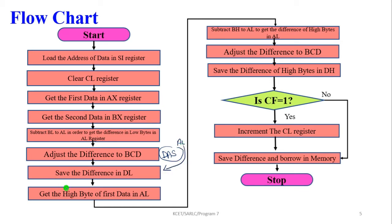Next, get the high byte of the first data into AL — AH is moved into AL. Subtract BH from AL to get the difference of the high byte stored in AL. The result is not a BCD number, so use the DAS command to adjust the difference to BCD. Save the high byte difference in DH. Finally, check the carry flag: if set, increment CL and move CL and the difference to memory; if zero, move CL (which remains zero) to memory and stop.